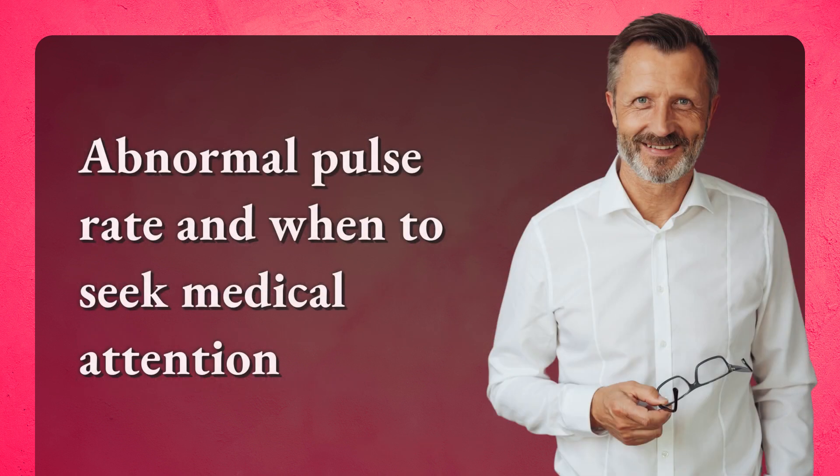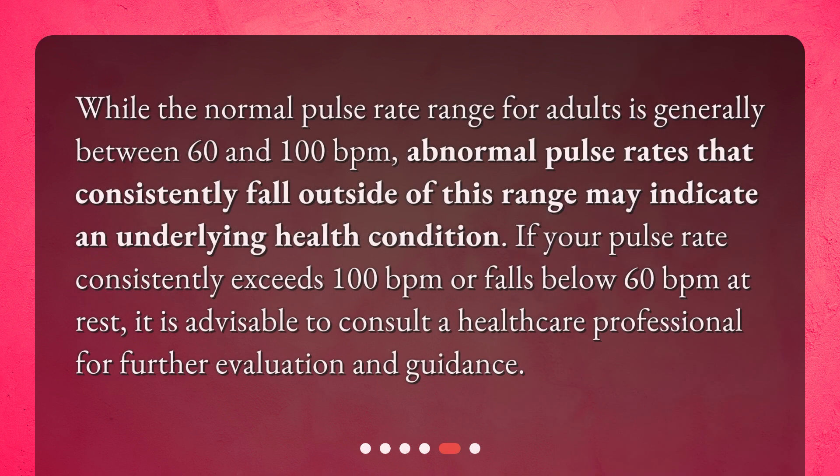While the normal pulse rate range for adults is generally between 60 and 100 BPM, abnormal pulse rates that consistently fall outside of this range may indicate an underlying health condition. If your pulse rate consistently exceeds 100 BPM or falls below 60 BPM at rest, it is advisable to consult a healthcare professional for further evaluation and guidance.